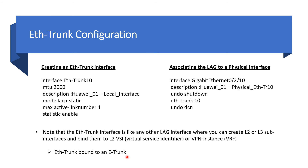One additional item worth noting: an Ethernet trunk can also be bound to an E-trunk. An E-trunk is an enhanced trunk used for cross-device link aggregation — essentially multi-chassis LACP. This is not in scope for this session; we will discuss in the next session how to configure an E-trunk and enhanced trunk together to achieve multi-chassis LACP circuit connectivity. Now let's look at troubleshooting for an Ethernet trunk LAG interface.